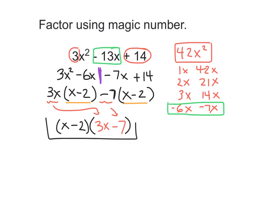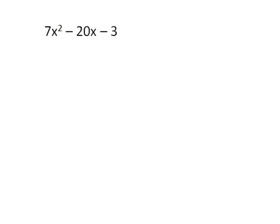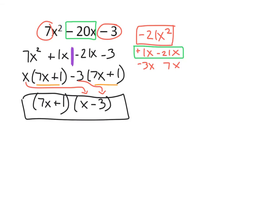And that is our factored form. This video is about 14 minutes by now, so if you want to try the next one on your own and then I'll just show the answer, go for it. If you want to watch those two examples again, that might not be a bad idea. The answer is 7x plus 1 times x minus 3.